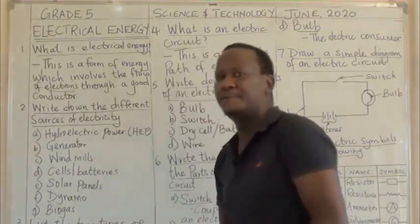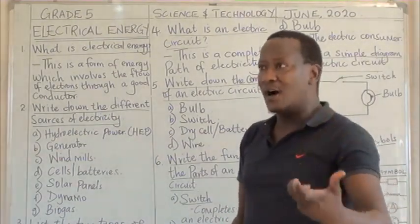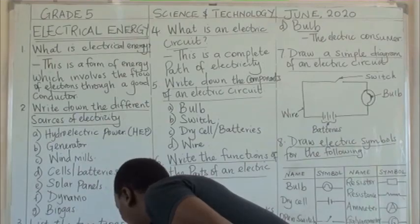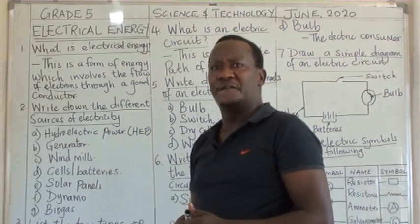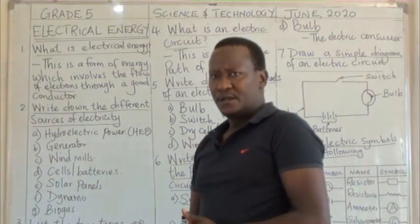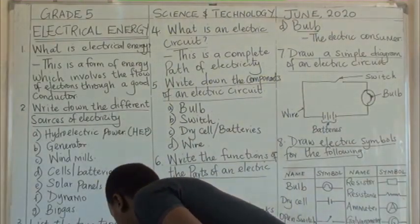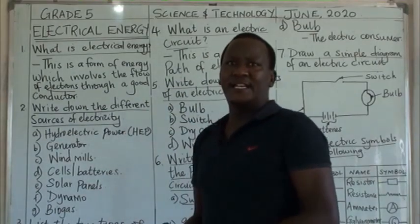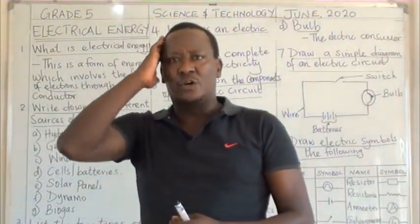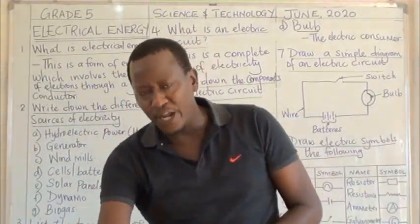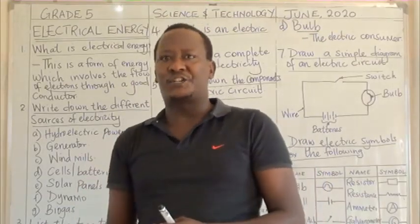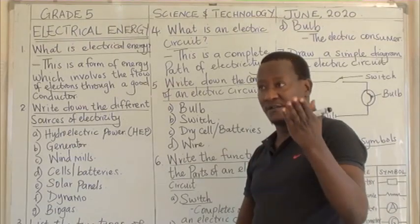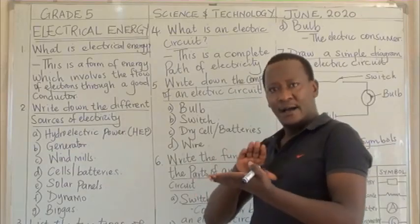When we come to static electricity, it does not allow the flow of electricity. Instead, it involves what we call friction. For example, lightning is caused by the friction of two oppositely charged clouds. Another example: if you rub a ruler on your hair for a long time and bring it close to small pieces of paper, they will be attracted to it. So forms of static electricity include lightning and friction, like rubbing a ruler against your hair.